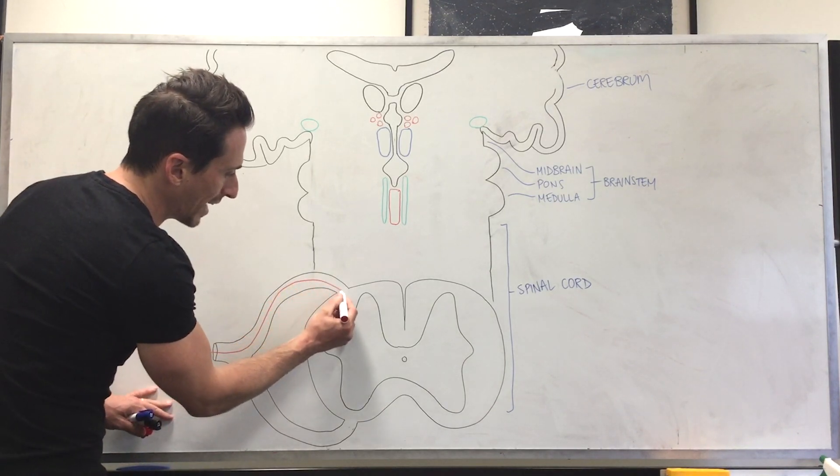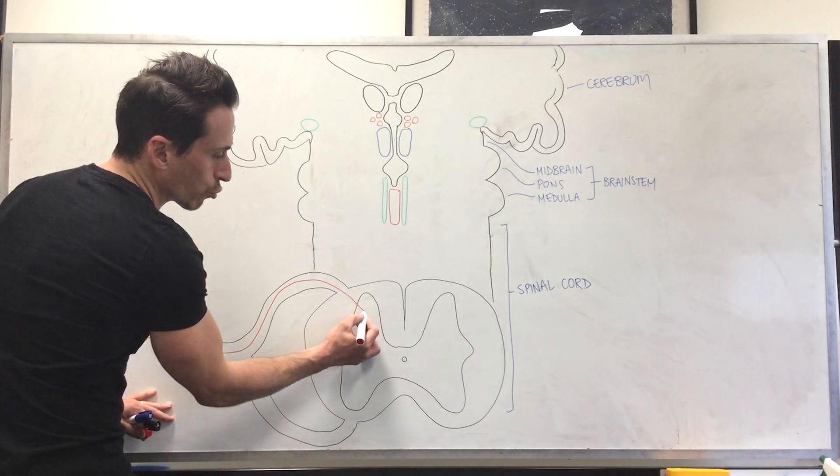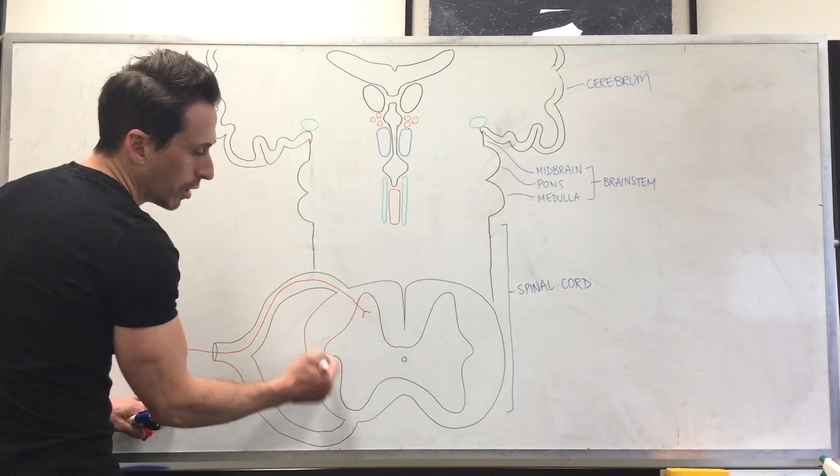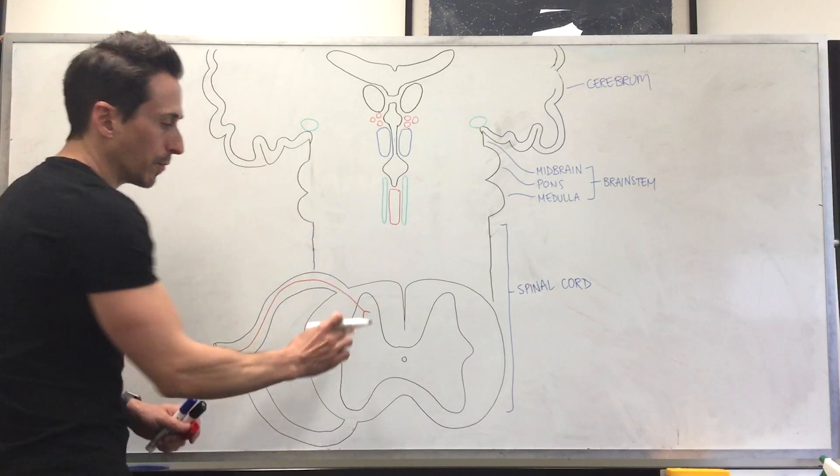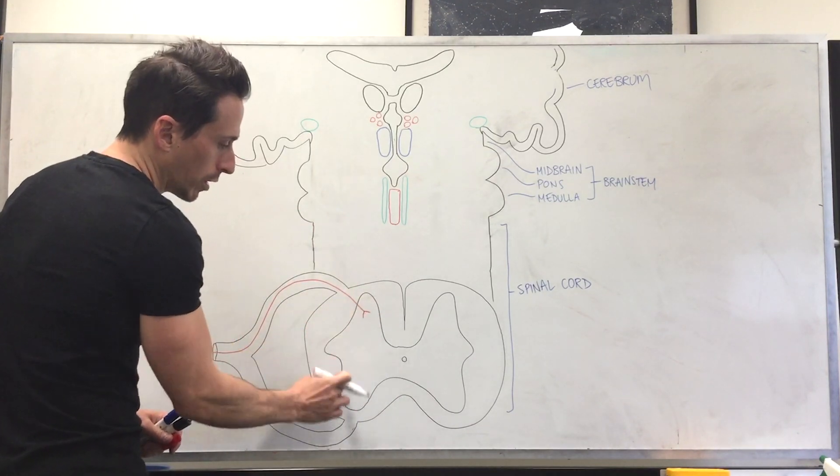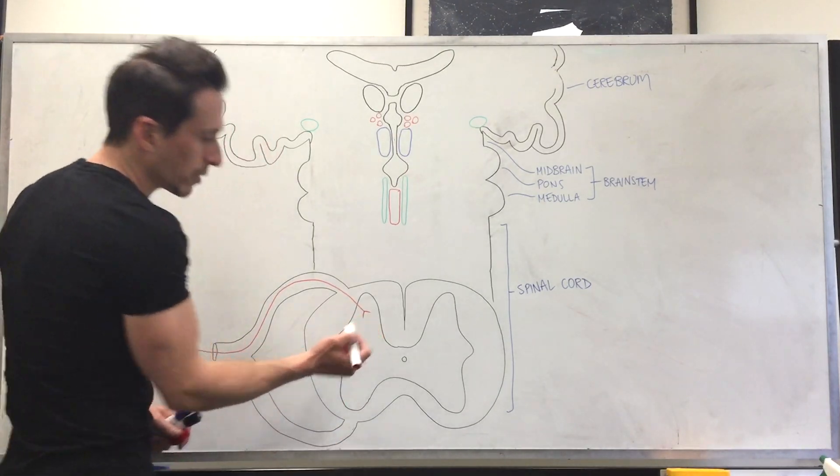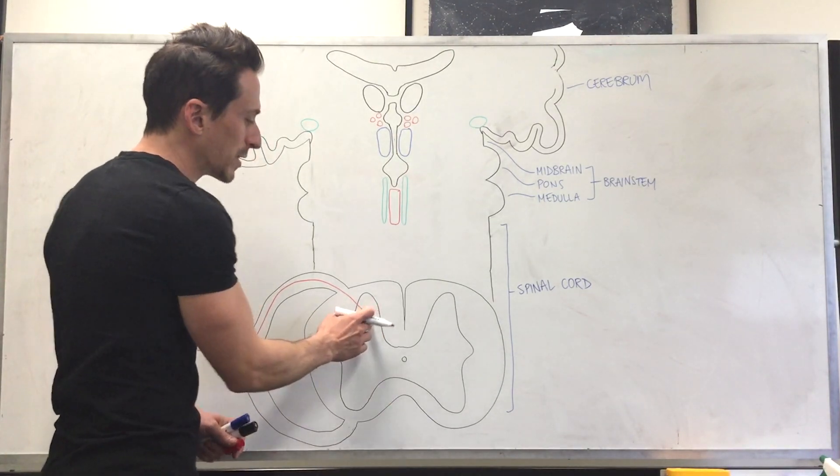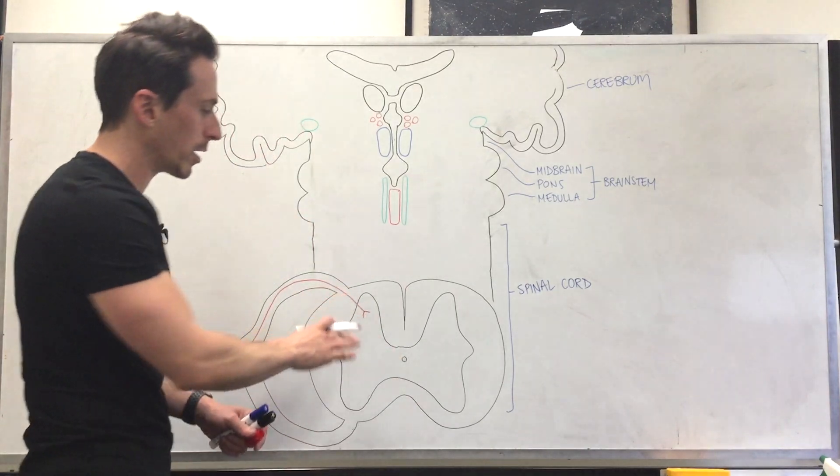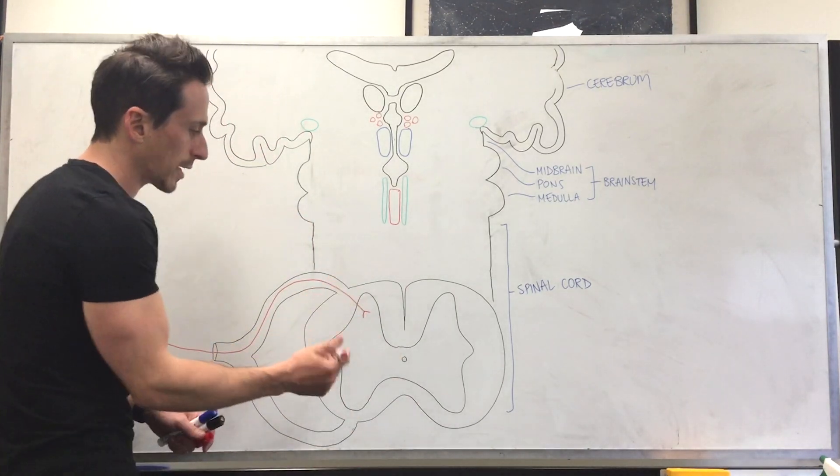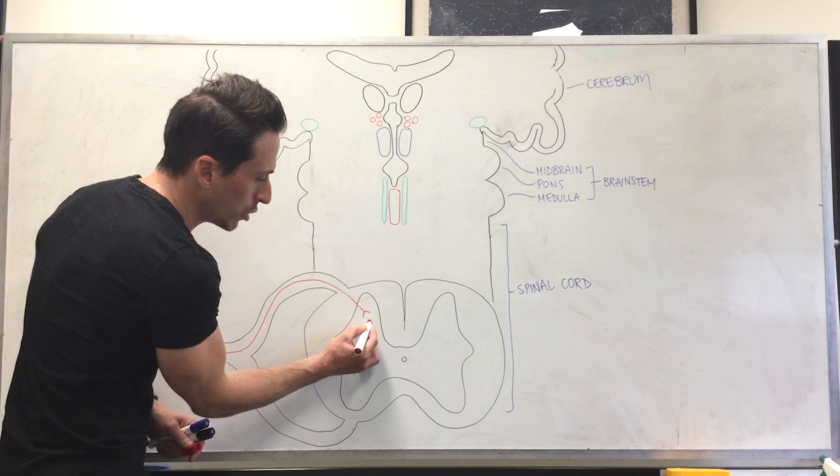It goes in and it synapses at the grey horn of the spinal cord. So dorsal grey horn, ventral grey horn, lateral grey horn. So it synapses here at the dorsal grey horn, specifically at an area called the substantia gelatinosa. I won't write it down, but I'll talk about some other ones in a second. It synapses with the second neuron here.